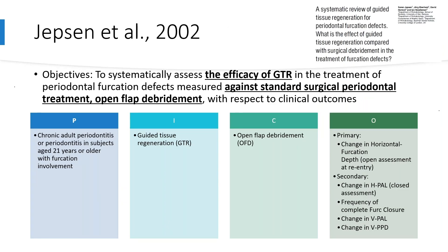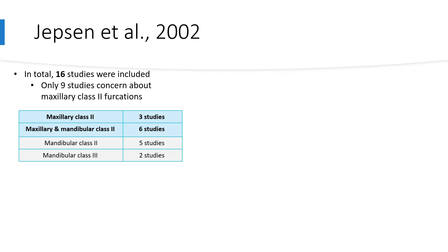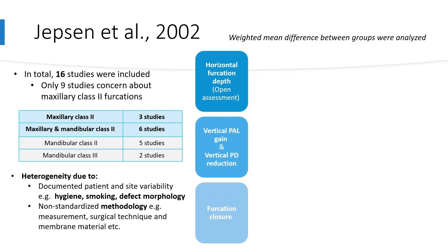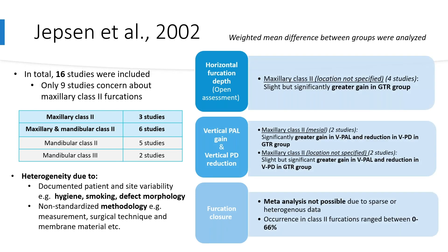The following two papers are more applicable to the regenerative approach. Yepsen et al. in 2002 aimed to systematically assess the efficacy of guided tissue regeneration in the treatment of periodontal furcation defects compared to open flap debridement, with the primary outcome being change in horizontal furcation depth assessed at re-entry. Sixteen papers were included, but only 9 were for the maxillary, and even fewer were specific to interproximal sites. Heterogeneity arose from variability in multiple factors as well as methodology in terms of measurement, surgical technique, and membrane used. The authors found a slight but significantly greater gain in horizontal furcation depth at re-entry in the GTR group, though the location of the furcation defect — buccal, mesial, or distal — was not specified.